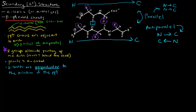I mentioned that the R groups alternate pointing up and pointing down, above and below the plane. Notice that in this chain we have an R group pointing up, and then the next one the R group is pointing down — up, then down, and the next would be down again. They alternate. The R groups circled in purple illustrate this point. The pleats are the alpha carbons — here is an alpha carbon where the R group is attached. Those little bends are the actual alpha carbons. And the H bonds are perpendicular to the direction of the polypeptide chain.